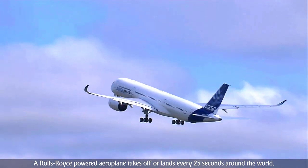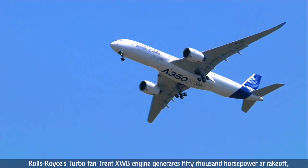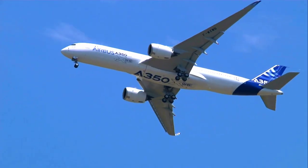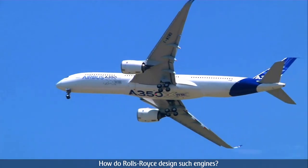A Rolls-Royce powered airplane takes off or lands every 25 seconds. Rolls-Royce's turbofan Trent XWB engine generates 50,000 horsepower at takeoff, equivalent to the power of about 500 cars. How do Rolls-Royce design such engines?